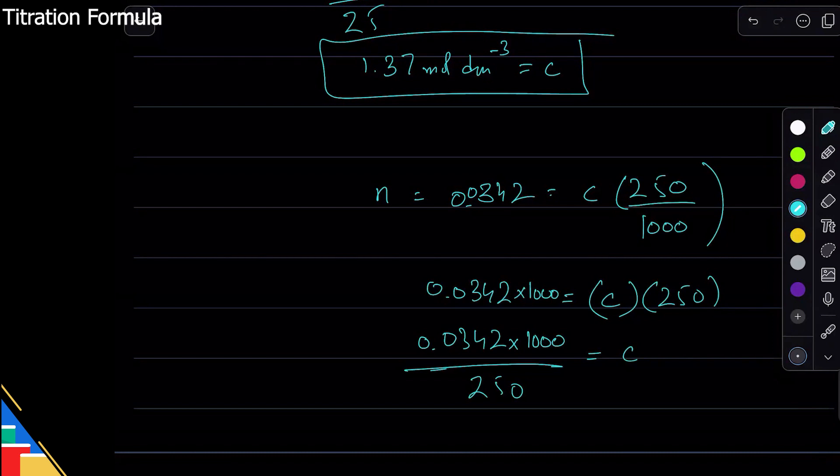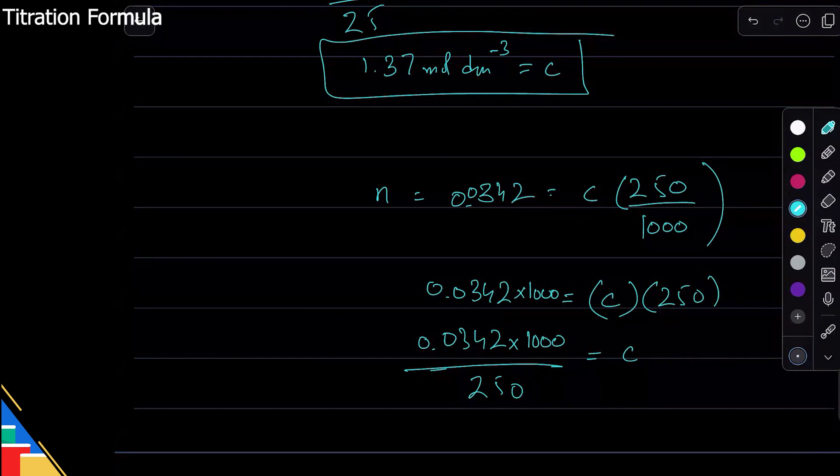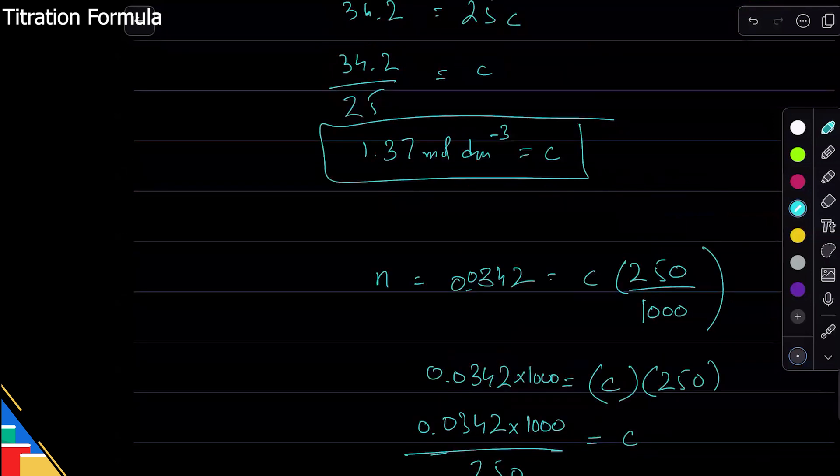Why do we divide the volume by 1000 to convert it to dm³? Because the standard unit that we use is liters or dm³. This gives me 0.137 mole dm⁻³.